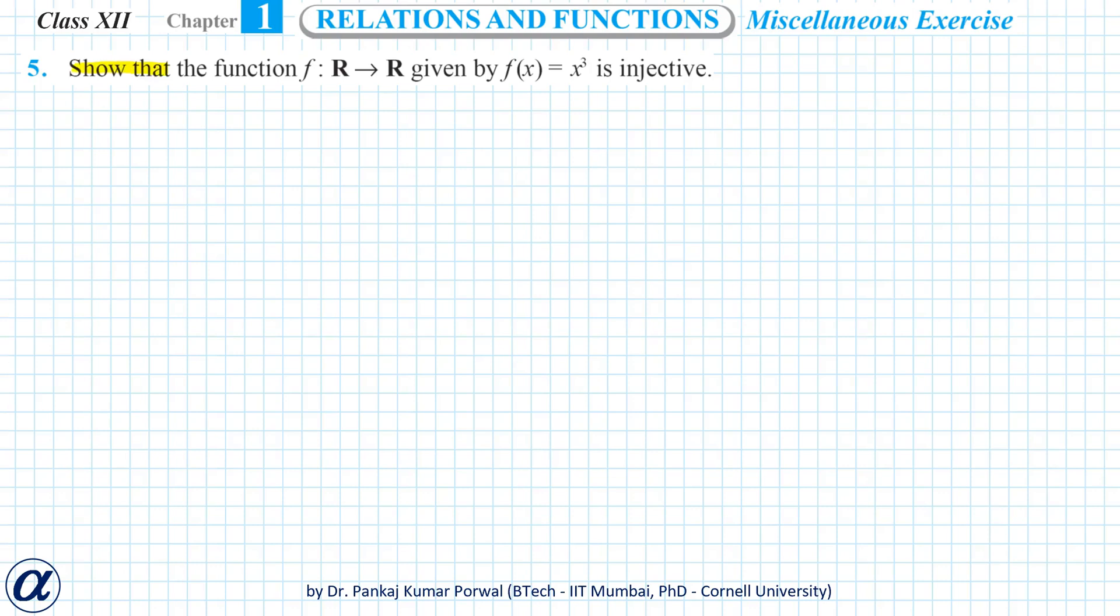In this question we have to show that the function f from R to R given by f(x) equals x³ is injective. Injective means one-to-one, and to show that the function is one-to-one we have